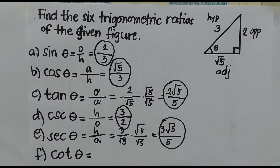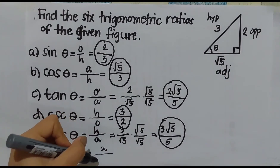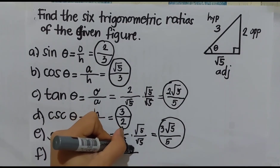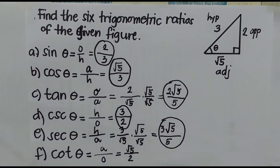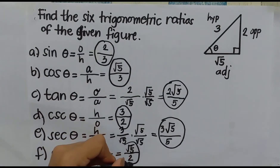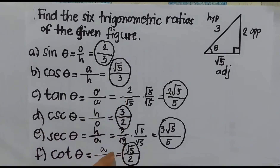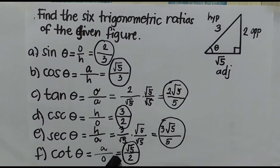For cotangent, which is the opposite of tangent, that is adjacent over opposite — so square root of 5 over 2. Since the radical sign is now in the numerator, there is no need to remove it. We only rationalize when the radical is in the denominator. Since 5 is not a perfect square, the answer stays as square root of 5 over 2.